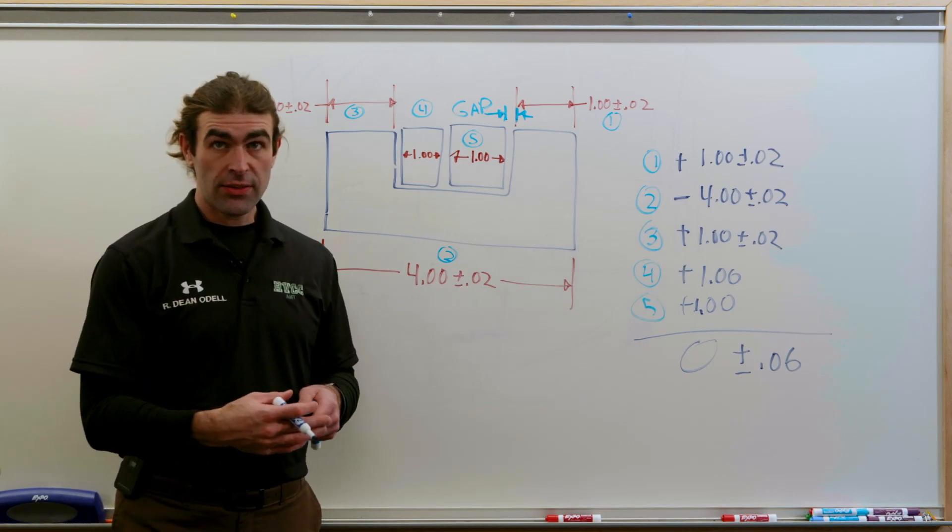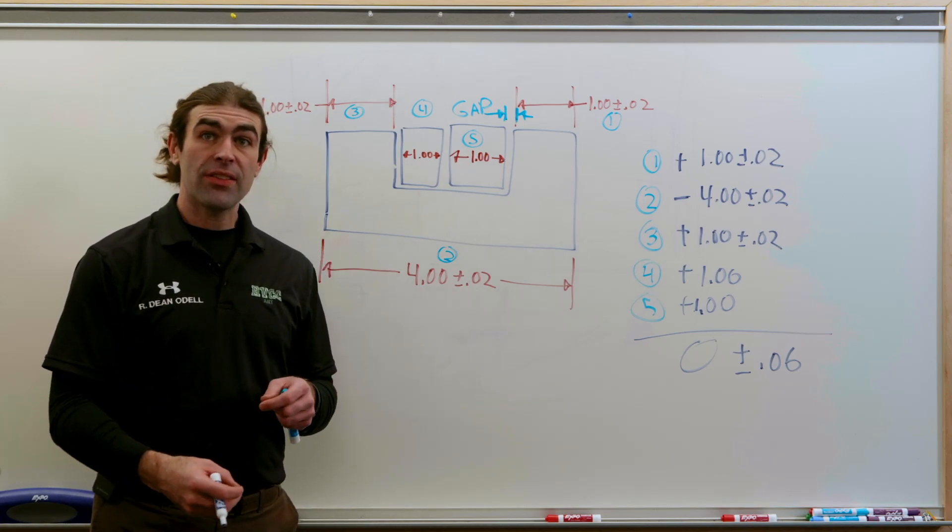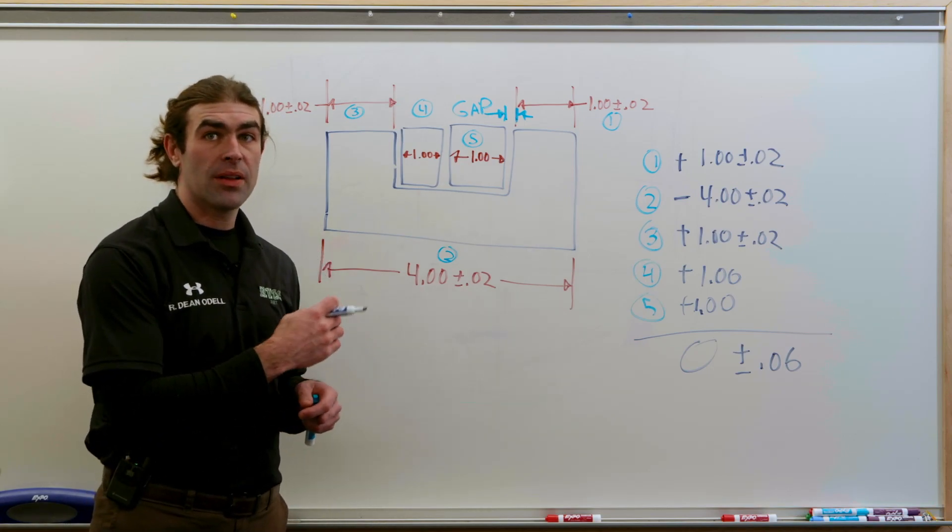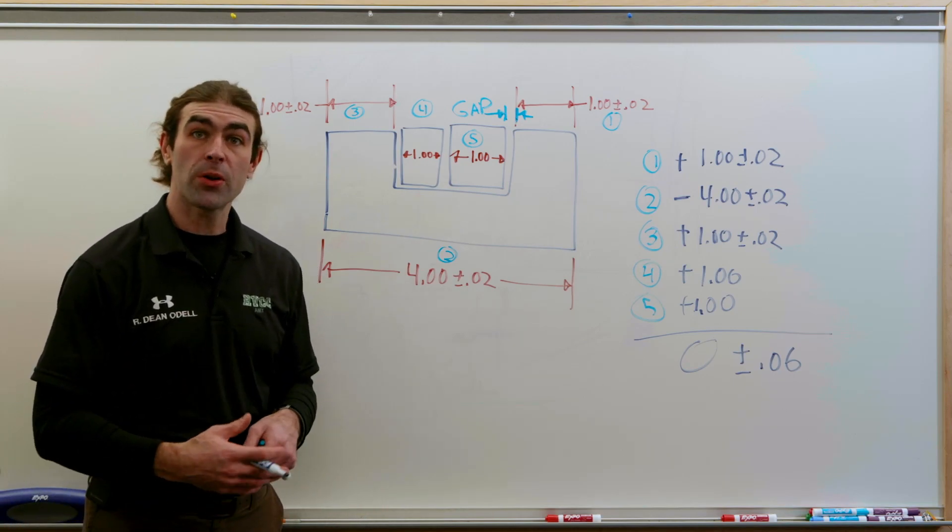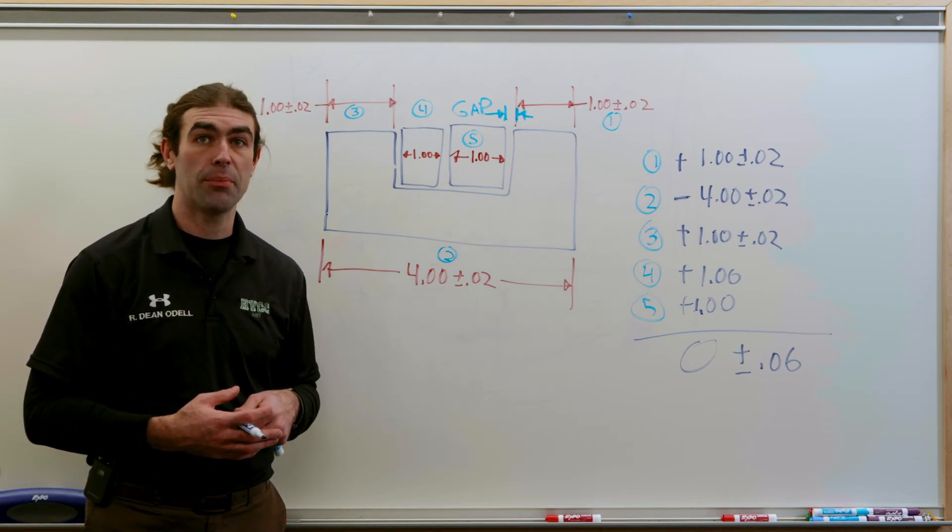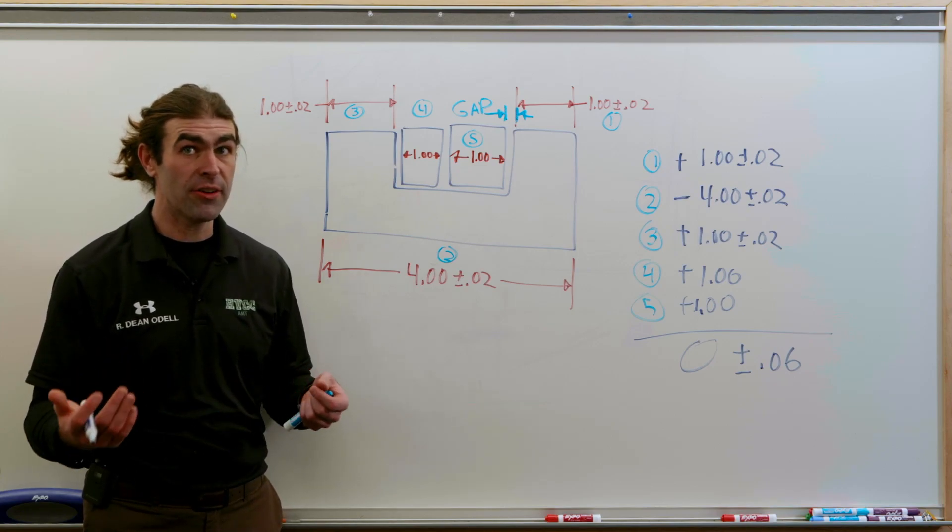So at worst case, there could be a negative 60 thousandths gap. That would mean the blocks would not fit in the assembly. There could also be a positive 60 thousandths gap. So sometimes both blocks might fit.